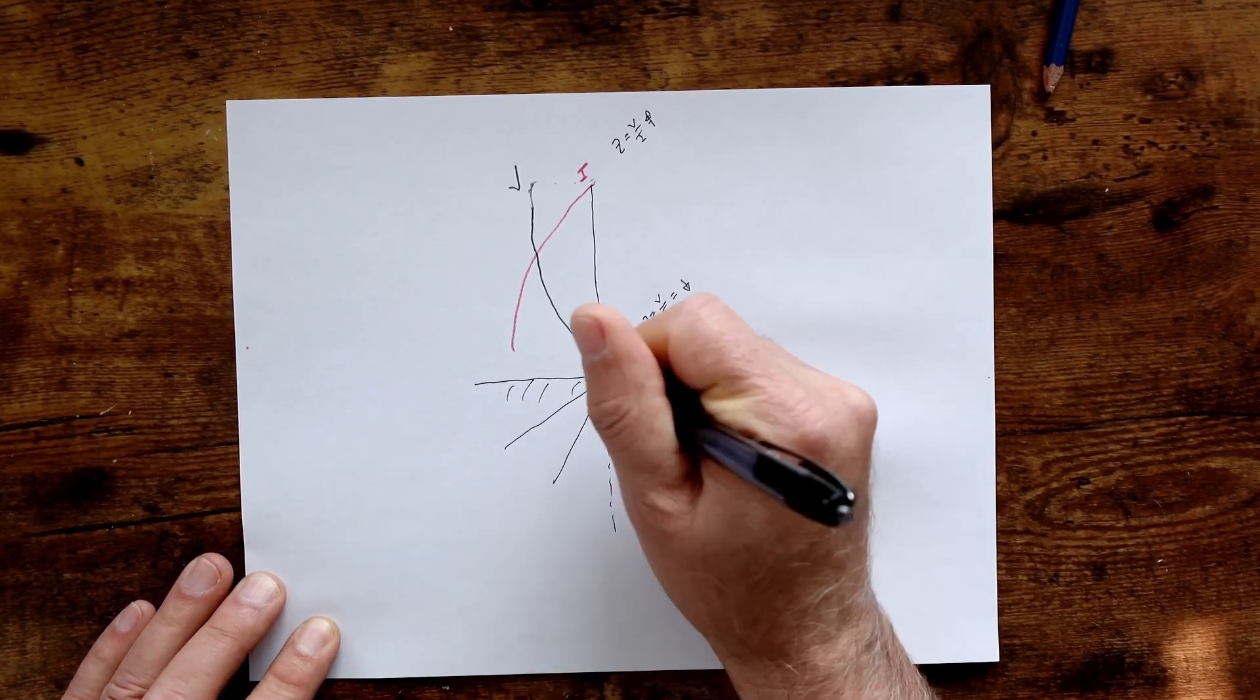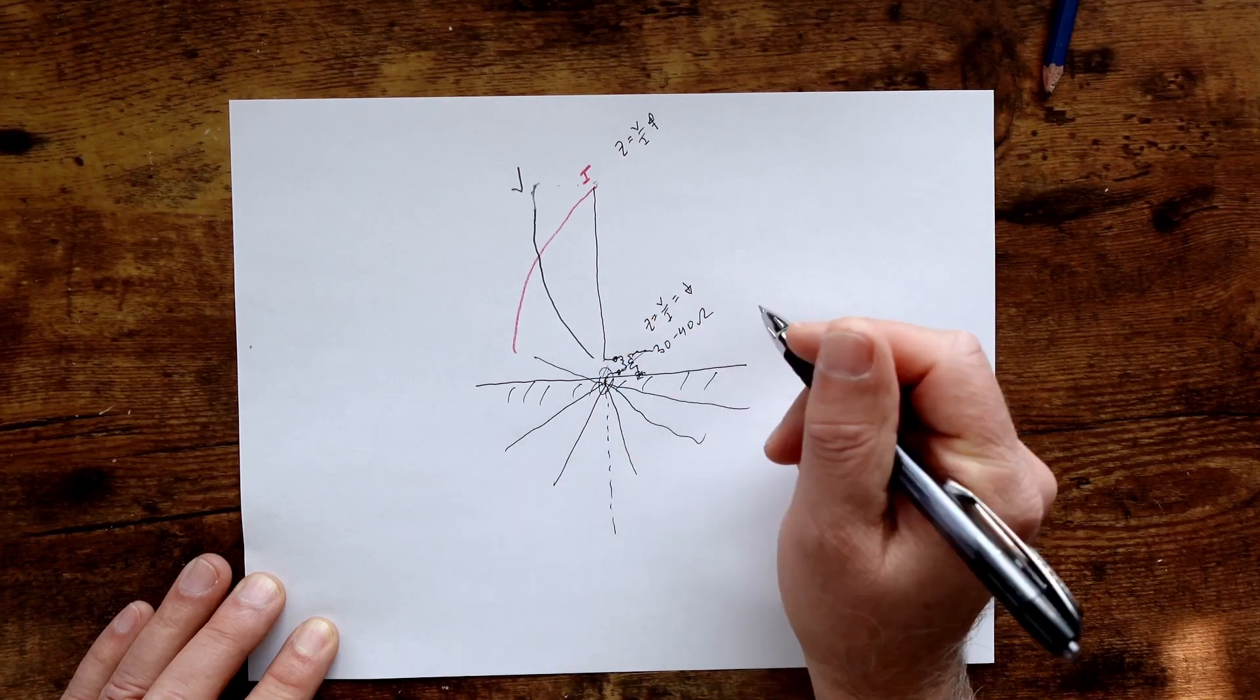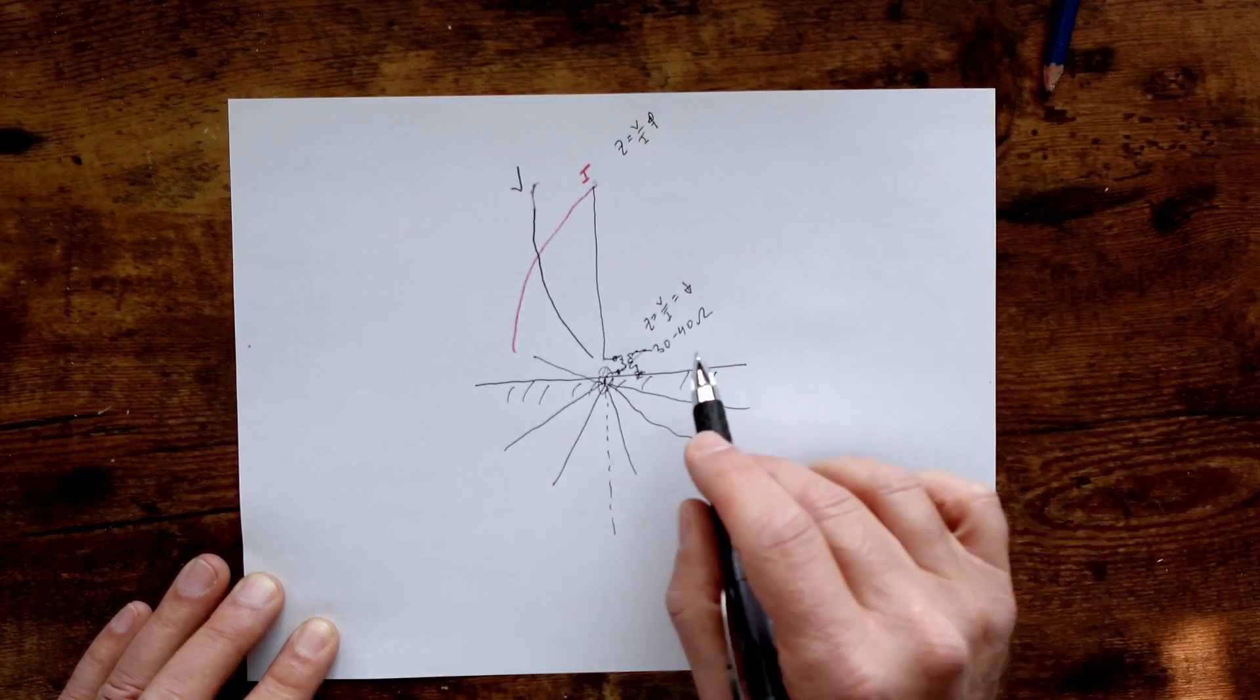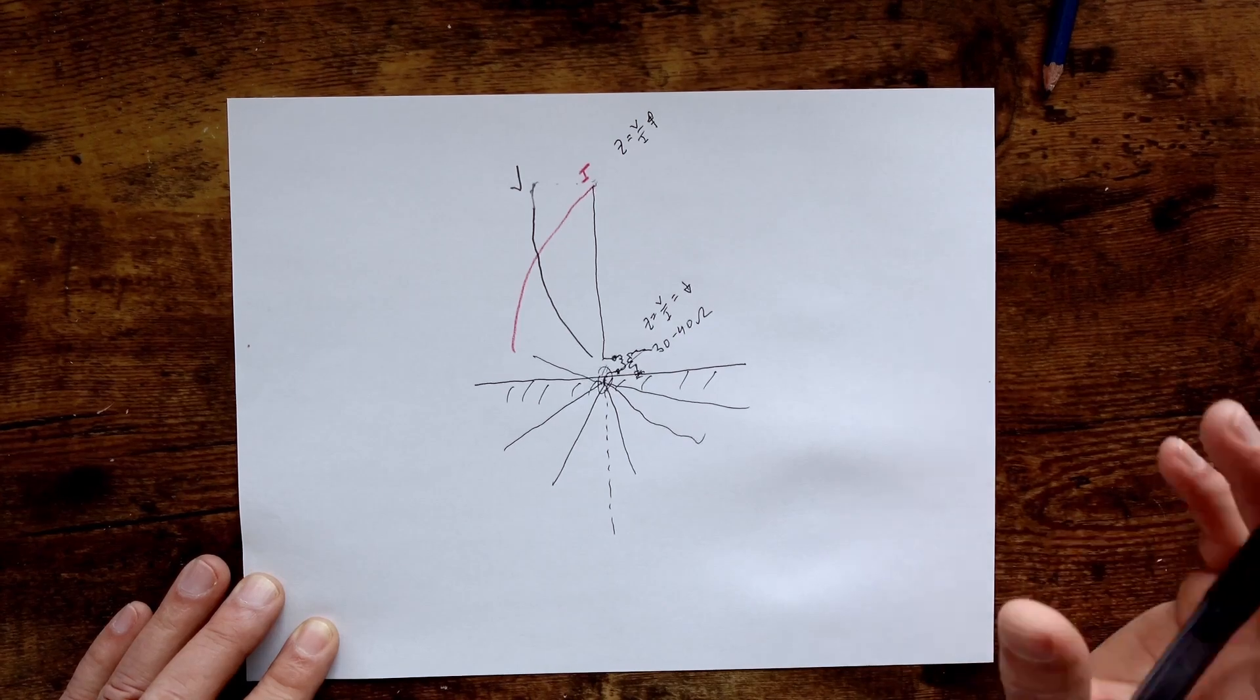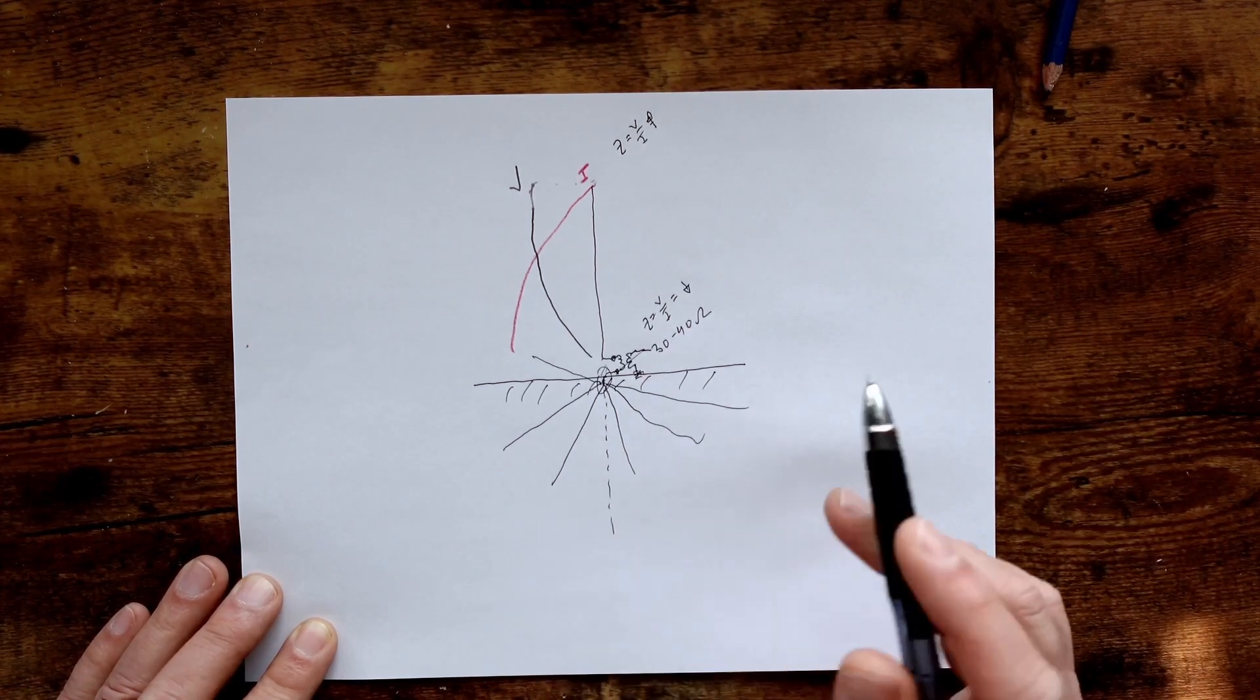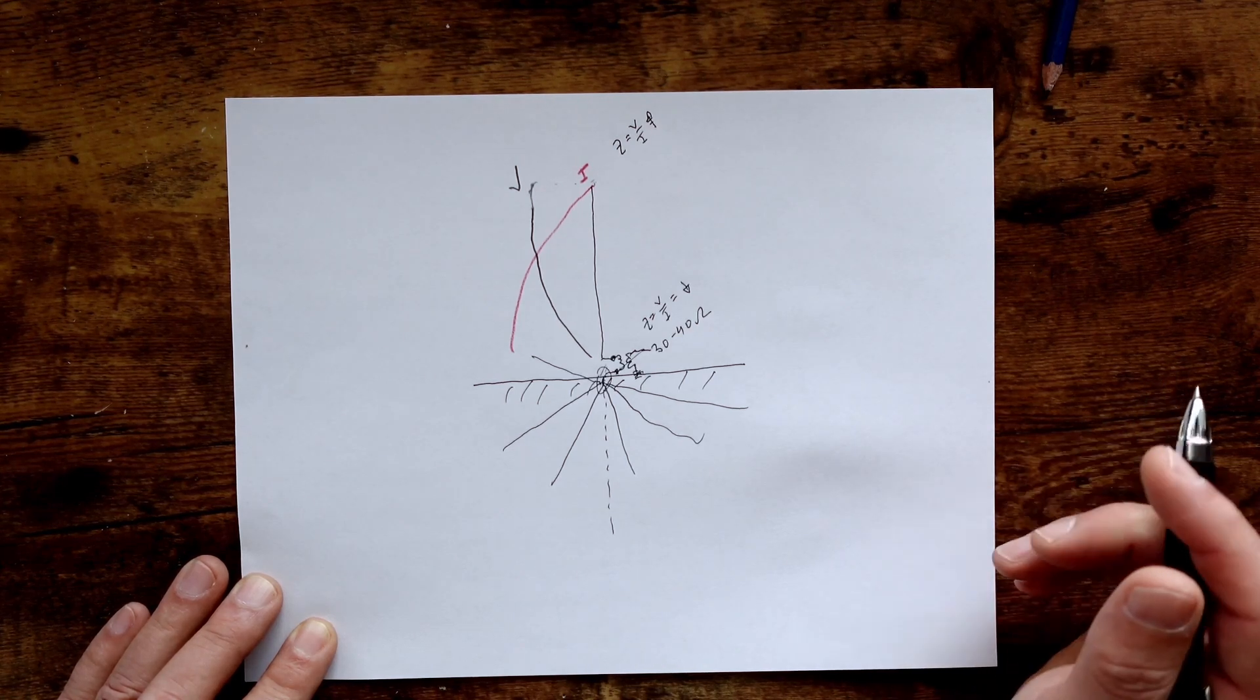Now, radials are going to look something like this underneath the antenna, and it's going to be hopefully 360 degrees. The better quality earth you have, the better ground you're going to have. So if it's over salt water, it's almost ideal. The drier the earth is, the worse off it's going to be. Now, I'm going to show you a plot here.